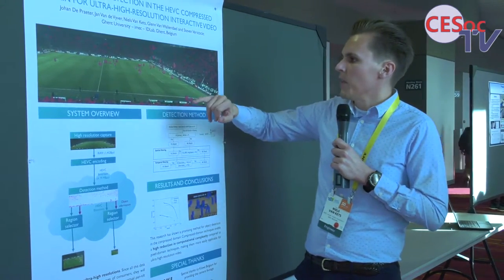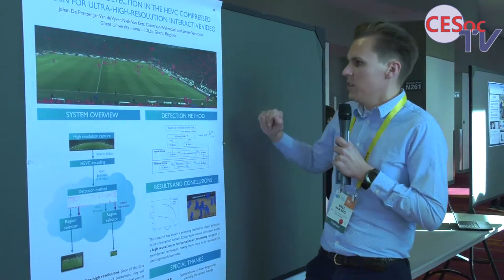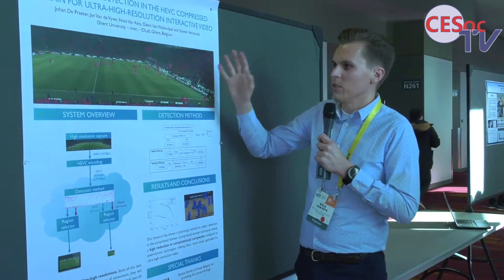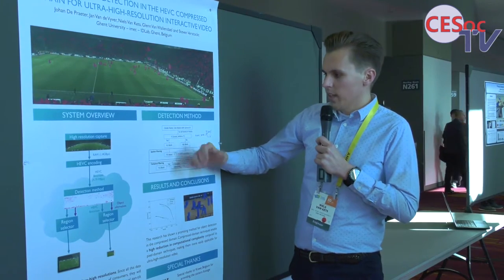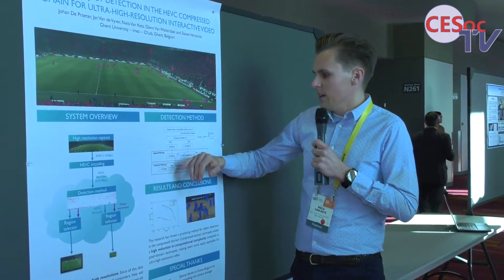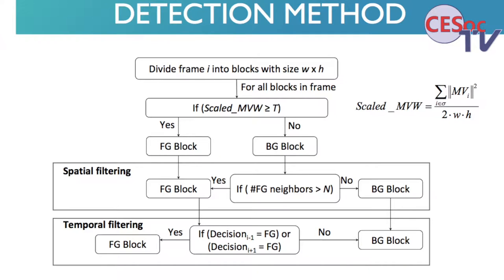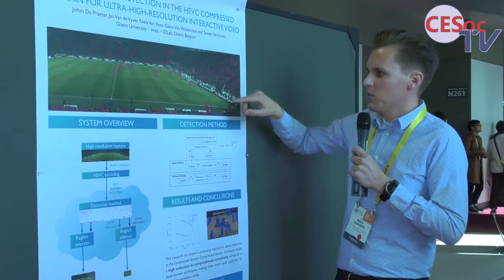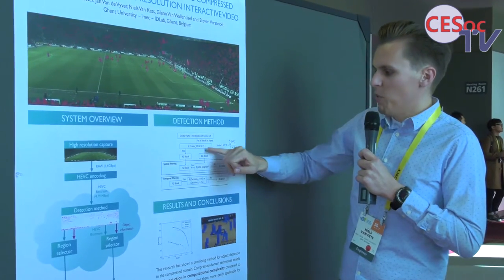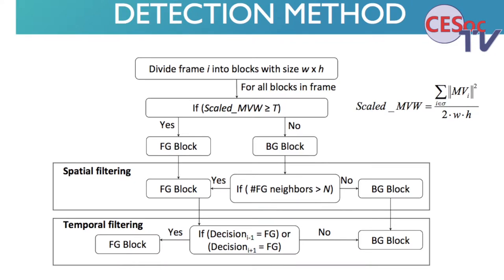What we actually do is divide our image into blocks of a certain size and height. We calculate a scaled motion vector based on the motion vectors that our HEVC bitstream created. From that, we get a rudimentary knowledge of whether a block is foreground or background — foreground would be, for example, a player moving. We also apply spatial filtering, which takes into account neighboring blocks: if a background block is detected but all its neighbors are foreground, then that block is probably also a foreground block.